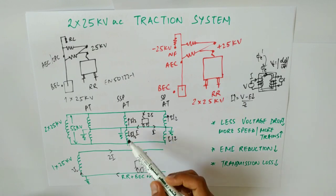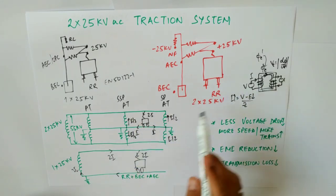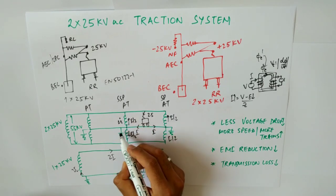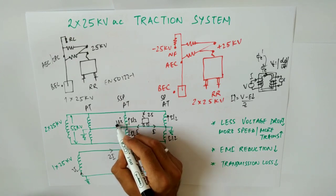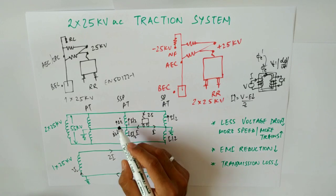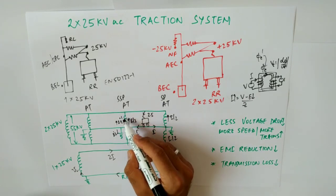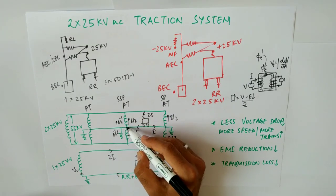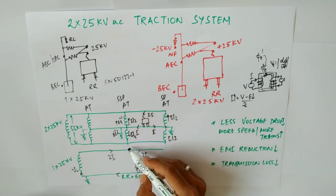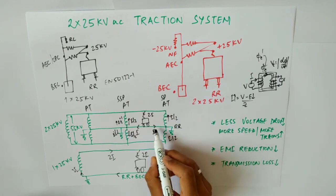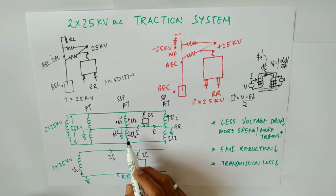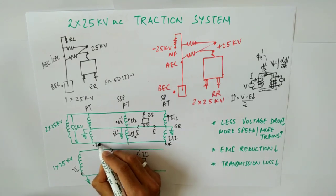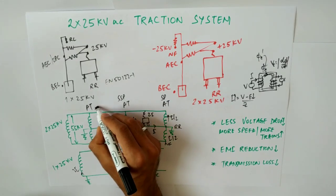In the auto transformer, when current flows into one side, a delta-I flows, and to cancel the resulting flux change, an equal current flows in the opposite direction on the other side. This process repeats until the current splits into equal halves — I/2 and I/2. The current from the running rails reaches the auto transformer, splits, goes into the auto transformer winding, and from there flows to the negative feeder at minus 27.5 kV, while the OCS is at plus 27.5 kV.